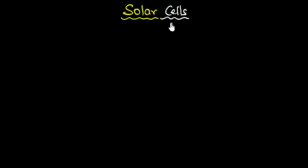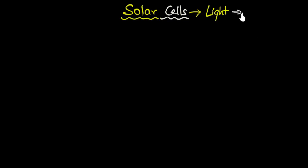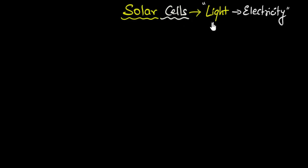Let's explore solar cells and see how they work. Solar cells are basically pn junction diodes — semiconductor devices, pn junctions which convert light into electricity. It can be any light, but since we tend to use sunlight because it's available in abundance,